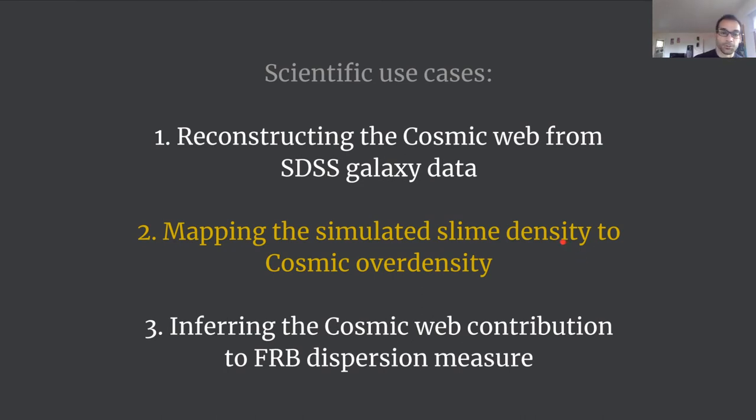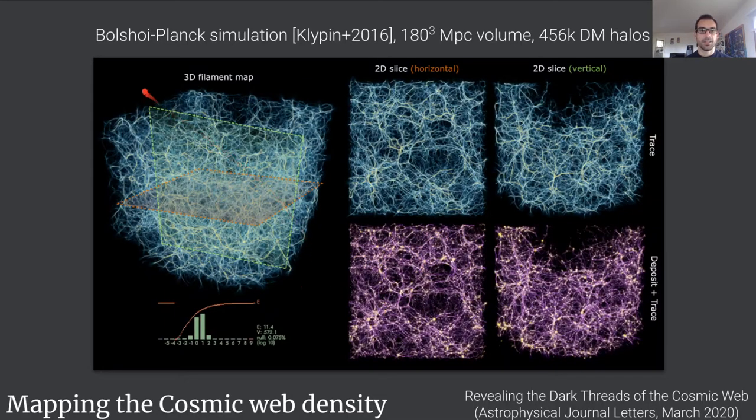The second task or use case has been to map the simulated slime density to cosmic over-density. What this means is that we need a physically meaningful quantity which astronomers understand, and this is called the cosmic over-density. How we did this was taking a simulated data set from the already mentioned Bolshoi-Planck simulation, then fitting to the data sets to obtain a dense three-dimensional map, and then using the ground truth data we cross-correlated the slime density distribution and the actual cosmic over-density distribution and obtained the mapping.